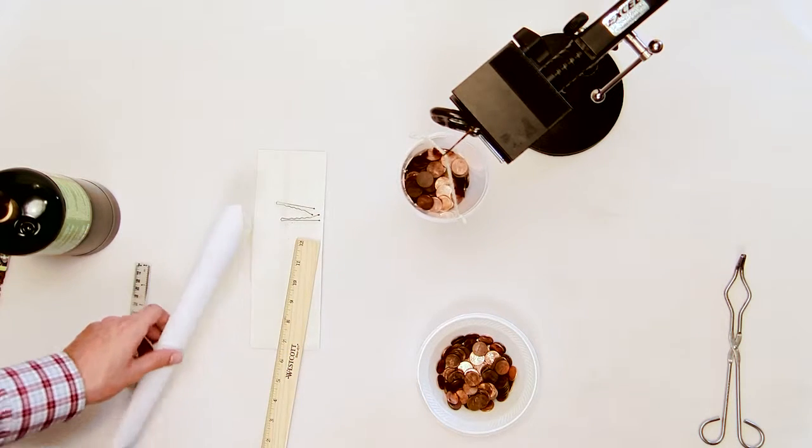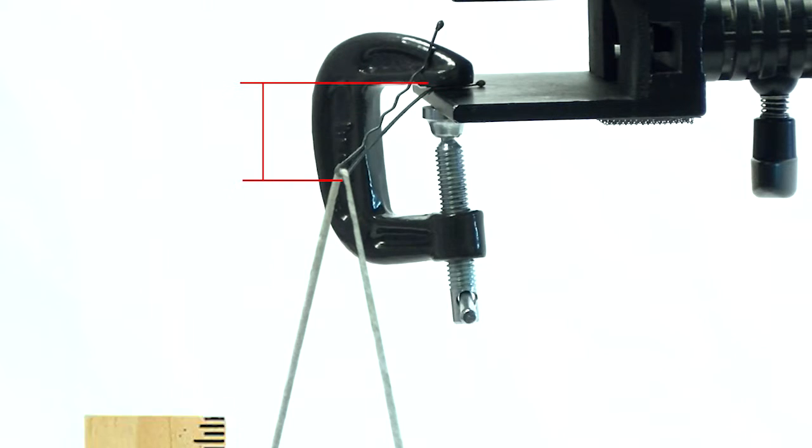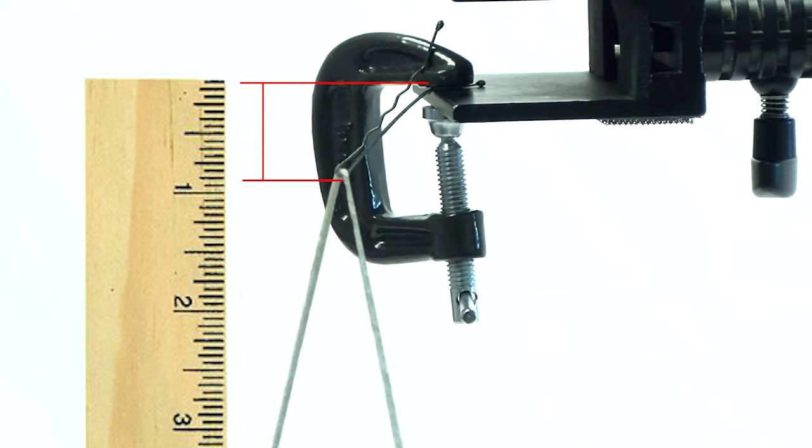Add a total of 300 pennies to the cup. Measure and record the deflection of the control bobby pin using a ruler.